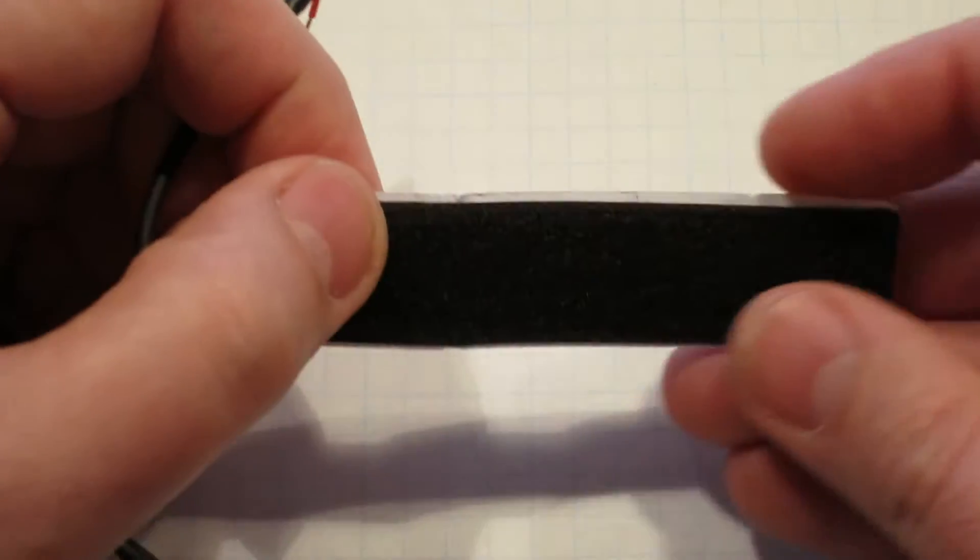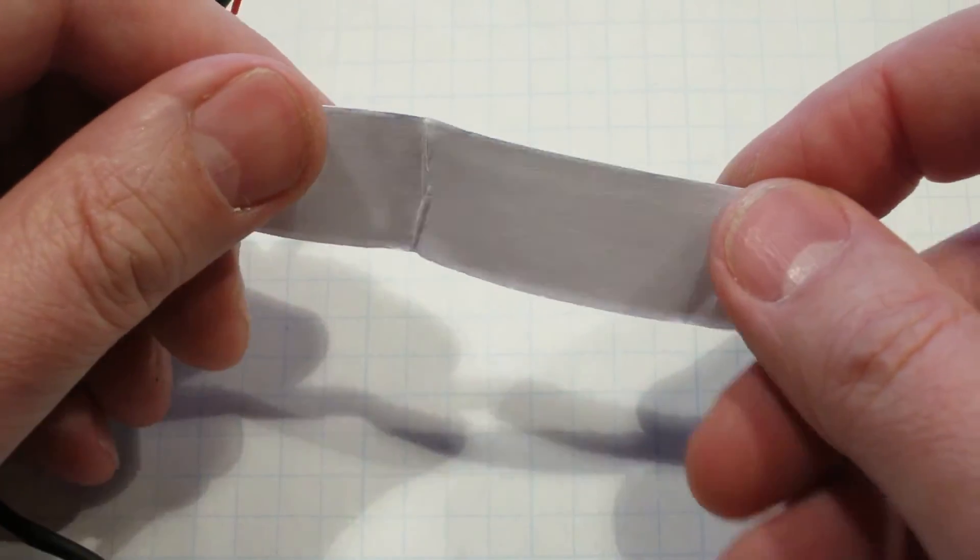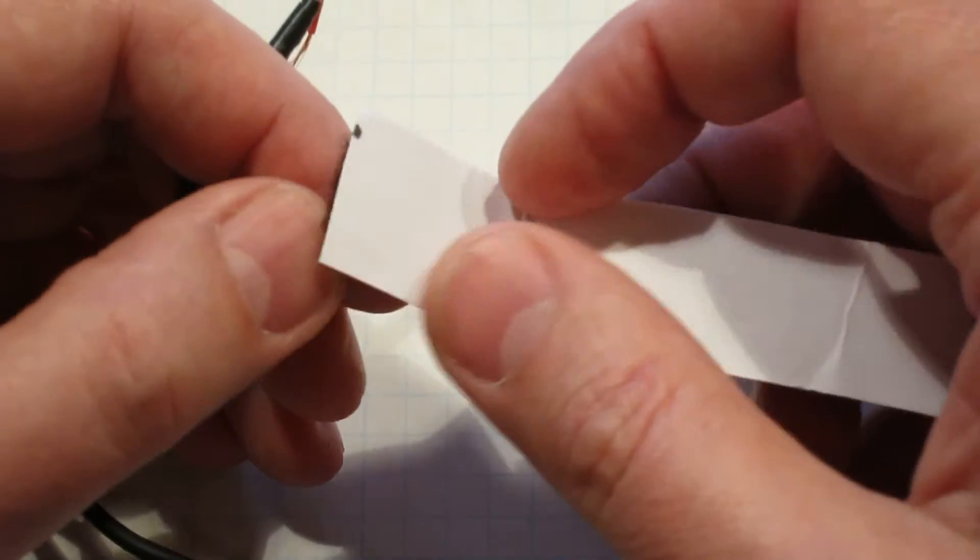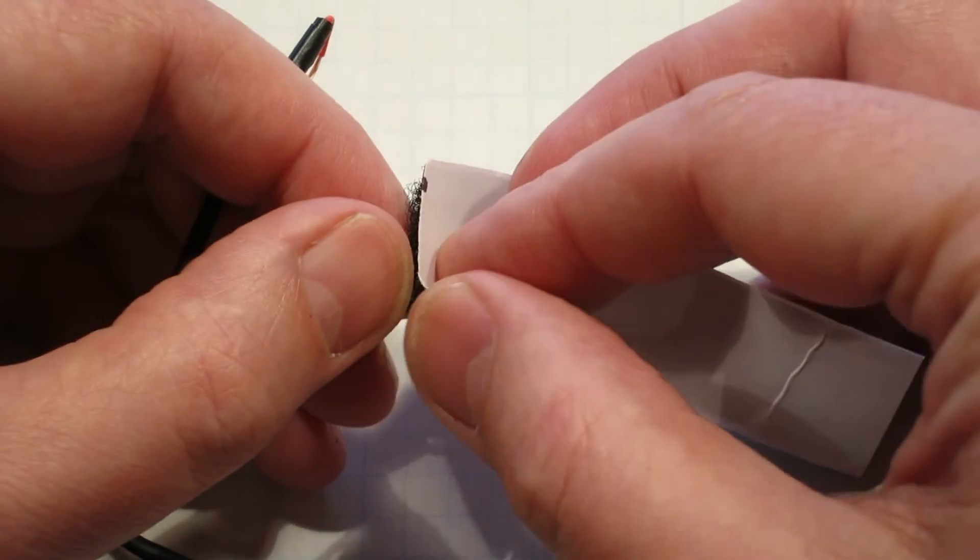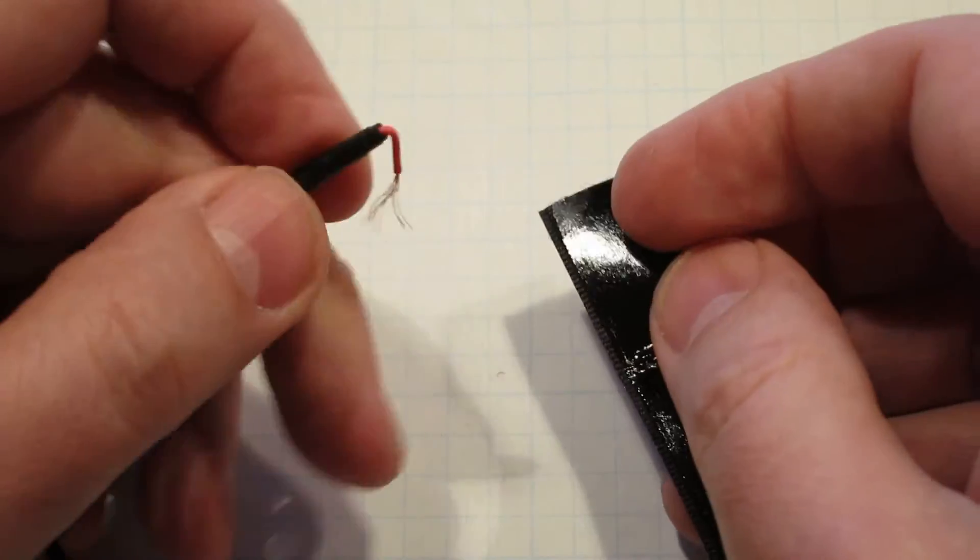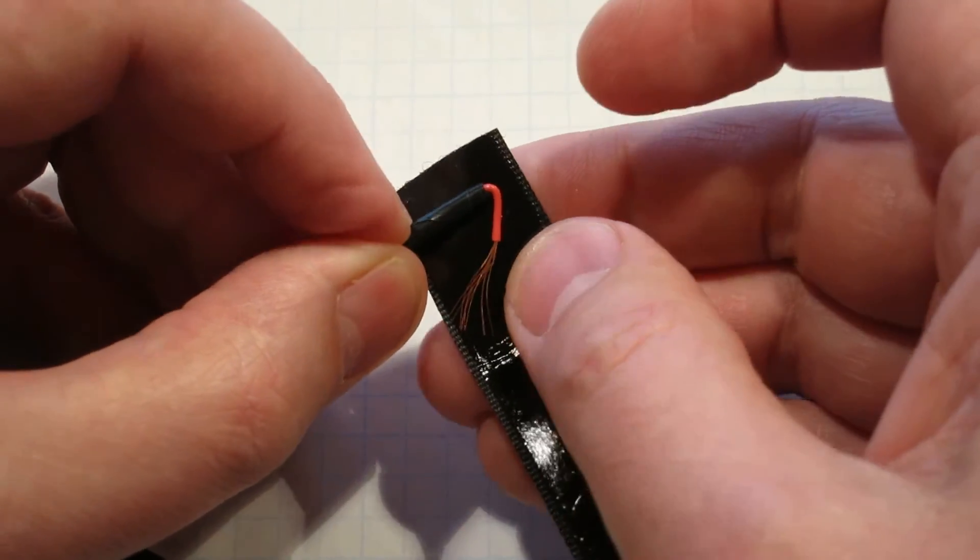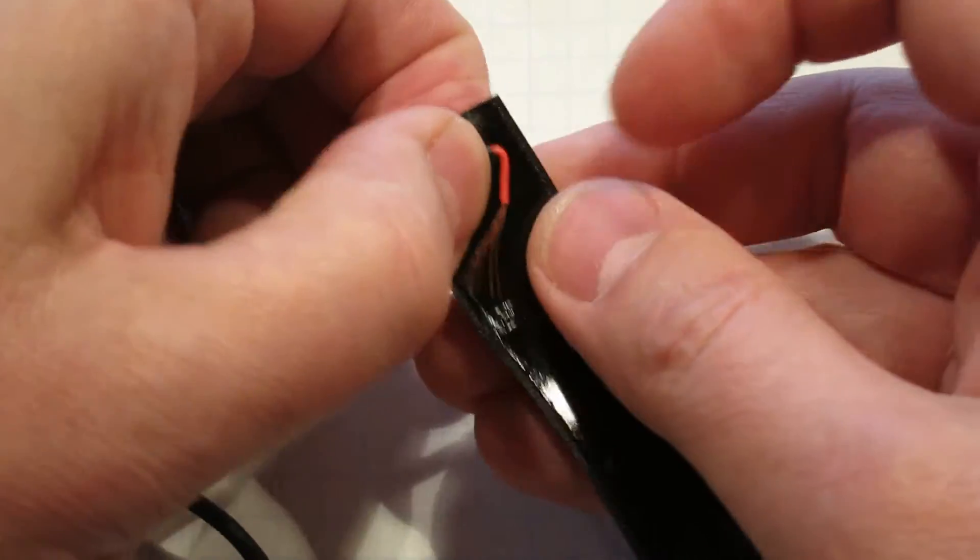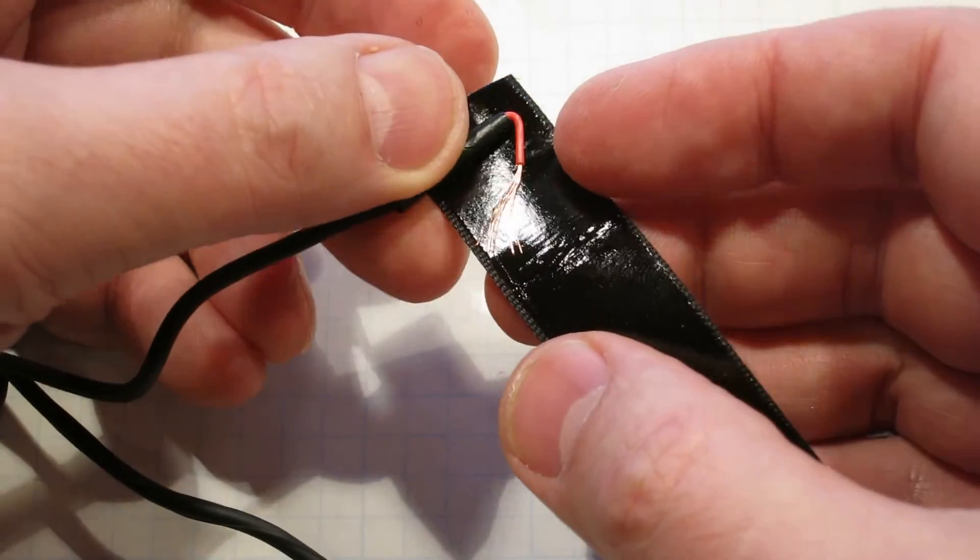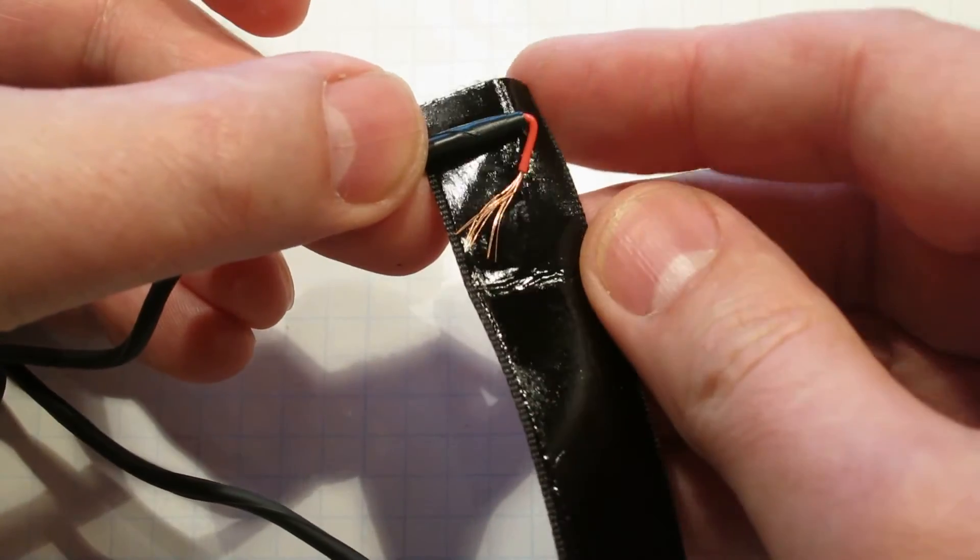Then you take about three inches of the loop part of Velcro. It's the softer part that feels like carpet. Peel this off, and you're going to put the wire in a little way from the end and make sure that strands of wire are exposed like that.